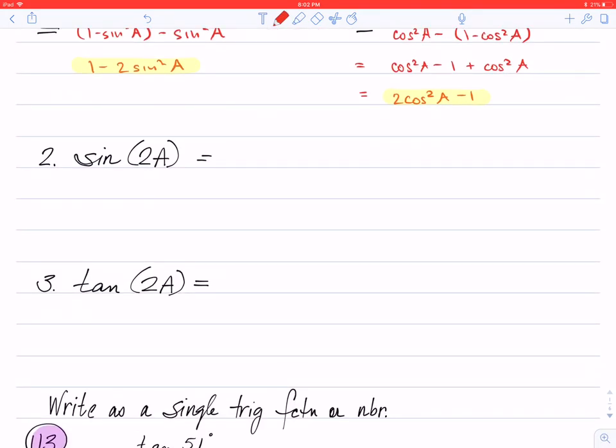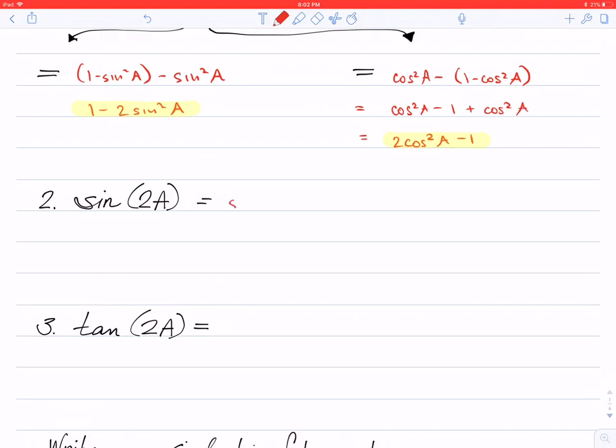Let's do the same thing for the sine double angle. Sine double angle is the sine of an angle plus itself. A plus A is the same thing as 2A.